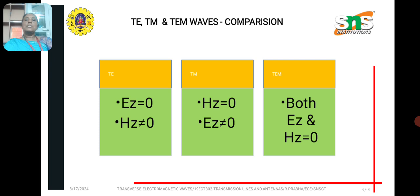And the third classification is Transverse Electromagnetic Waves, in which both the electric and magnetic fields in the direction of wave propagation is zero. For example, if we are assuming the direction of wave propagation is Z direction,